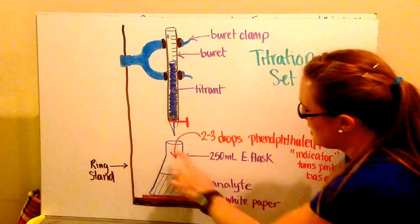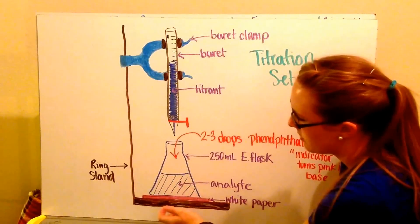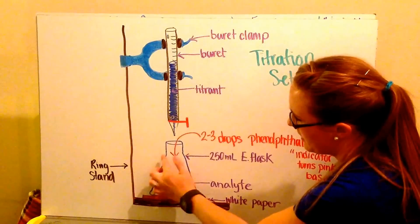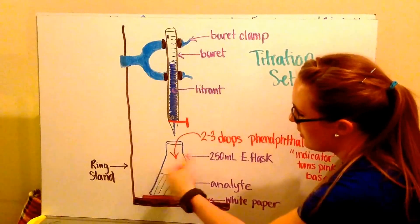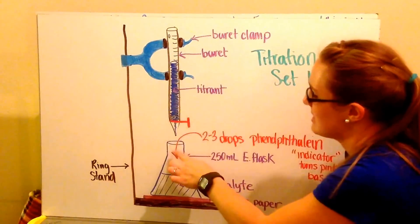I'm going to do this in an Erlenmeyer flask as opposed to a beaker because it has sides that are at an angle, so I can swirl it and there won't be any backsplash from when I put in my titrant.